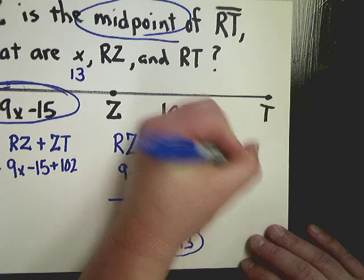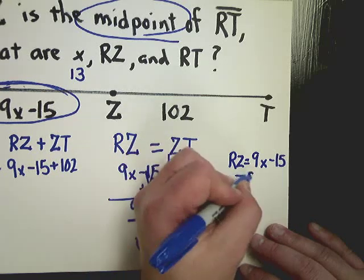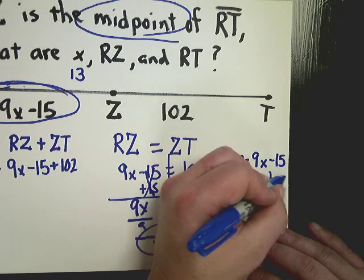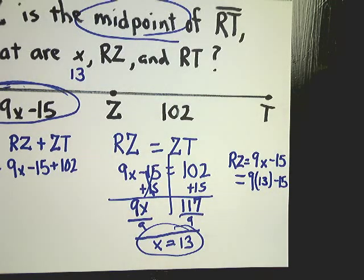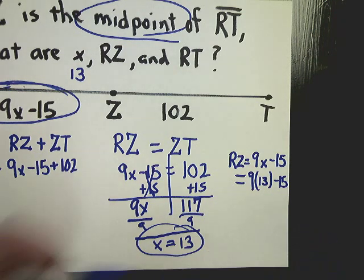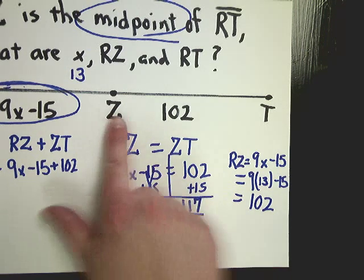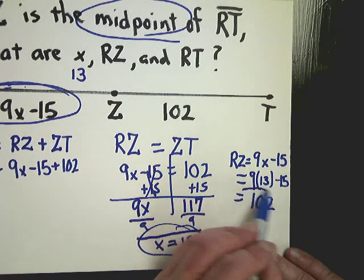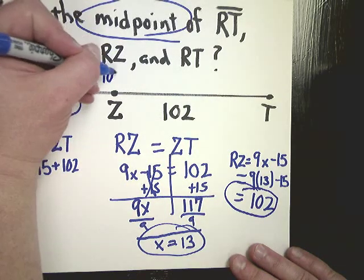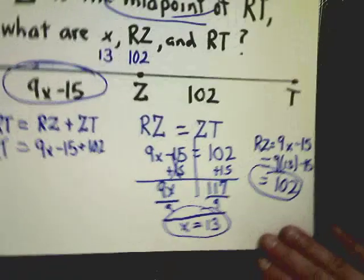It also wants to know what RZ is. Well, RZ is 9x minus 15, so I might need to write 9x minus 15. Then I'll rewrite that statement with a parenthesis around the x. In that parenthesis, I'm going to plug in the value for x, so 13. So I do 9 times 13, and minus 15, and get 102. By the way, you should be able to have figured that out anyway, because it told you that ZT is equal to RZ, and it told you that ZT is 102.